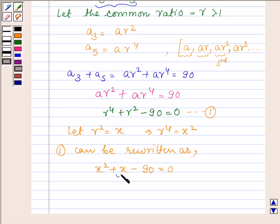Now by splitting the middle term, this can be written as x² plus 10x minus 9x minus 90 equals 0.